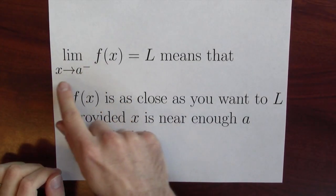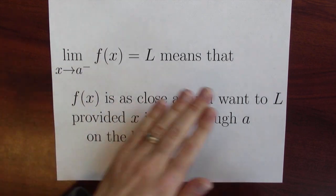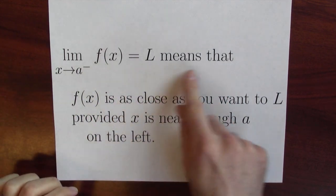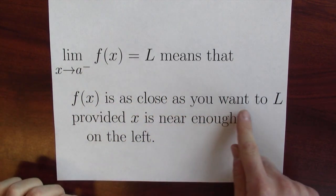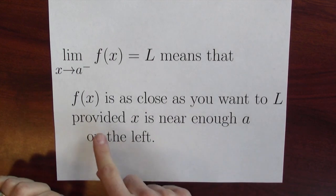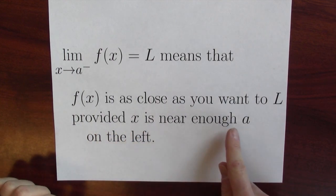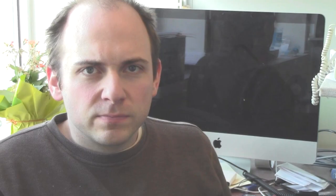So to say the limit of f of x as x approaches a from the left-hand side is equal to L means that f of x is as close as you want to L, just like usual, provided x is near enough a on the left-hand side. Let's go see some pictures of this at the blackboard.